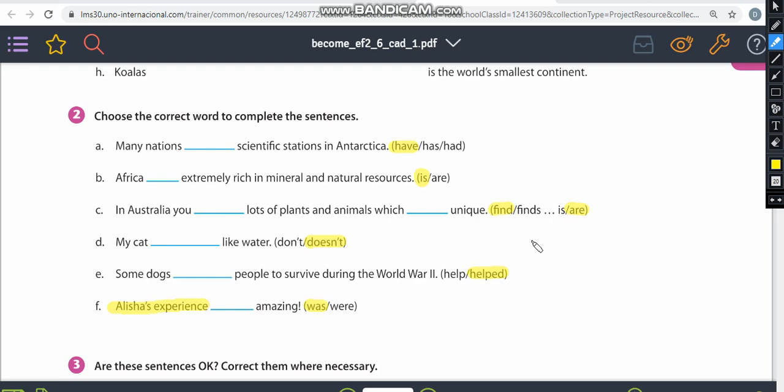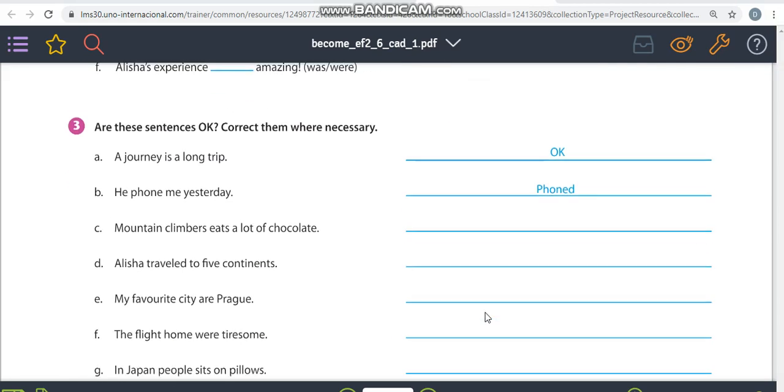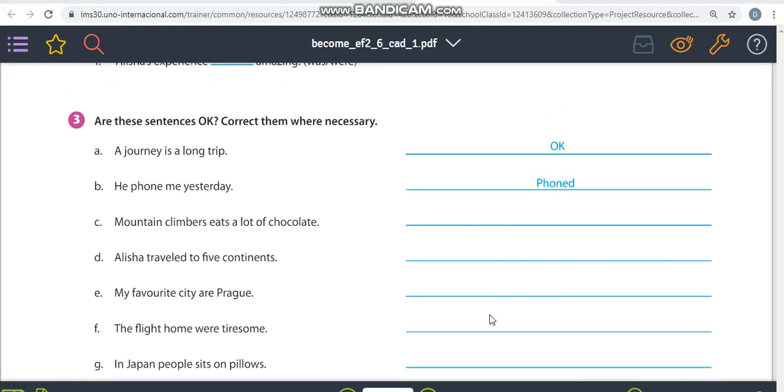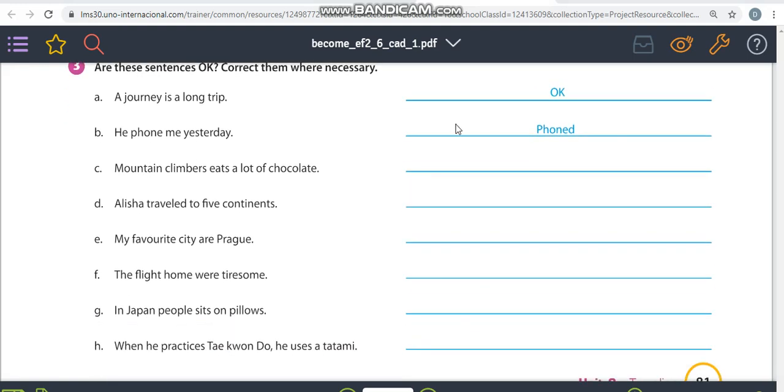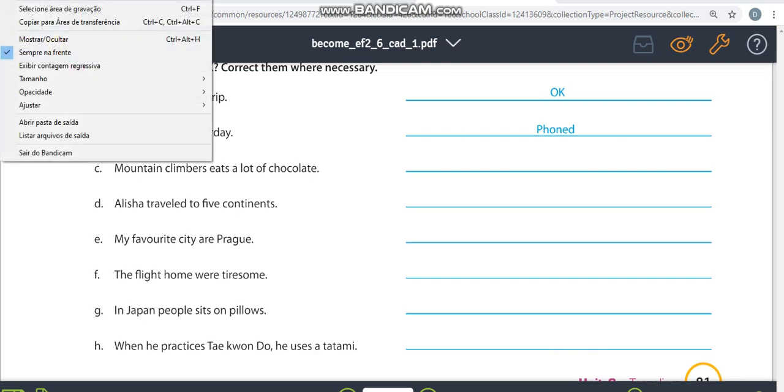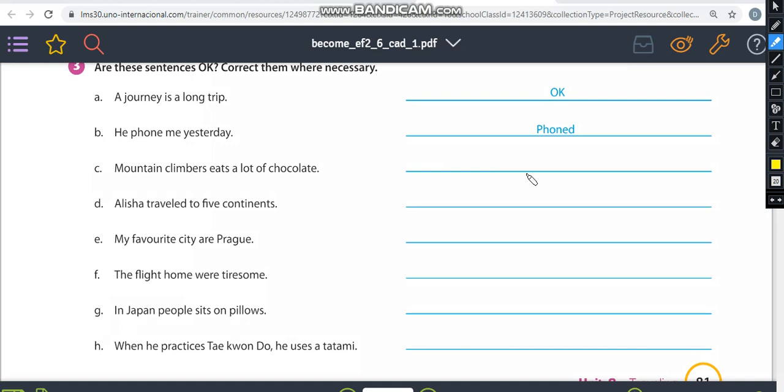Now let's go to exercise three. This one I really can do with my pen, but let's correct it together. Oh, but I can also highlight the mistakes. So let's start. Are the sentences okay? Correct them when necessary. So a journey is a long trip is okay. He phoned me yesterday. Wrong, it's phoned. So let's correct it.